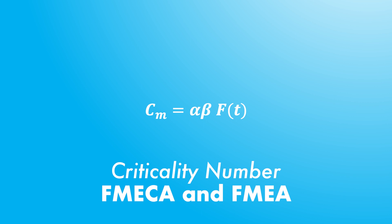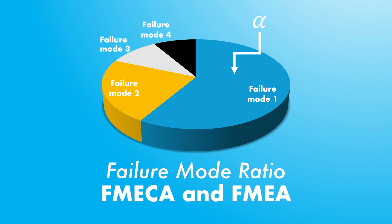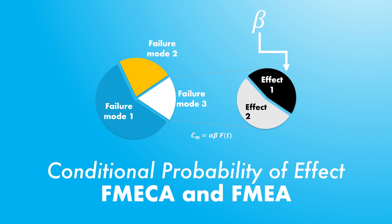The failure mode ratio is alpha, and the probability of failure — also called the failure function — is given as F(t). Alpha represents the failure mode ratio, indicating how often an item will fail in a specific manner. Beta is the conditional probability of a failure effect happening when a particular mode occurs. Beta is often set to 1 to consider only an end effect resulting from a failure mode.